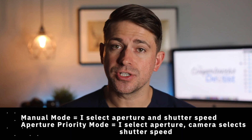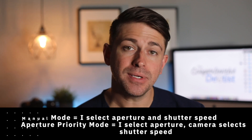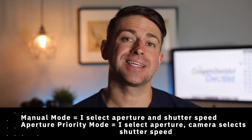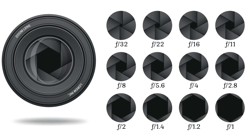In manual mode, proper exposure is dependent on me getting the aperture and shutter speed correct. In aperture priority mode, I pick the aperture or f-stop and the camera selects the best shutter speed to match my aperture. When I choose my aperture setting, it is based on depth of field, which we will discuss later. Here is an image that demonstrates how open or closed the aperture diaphragm is at specific f-stops. As you can tell, the aperture is open a lot at lower f-stops and mostly closed at higher f-stops.